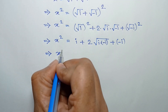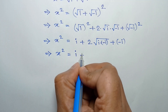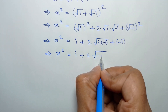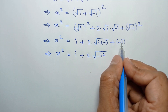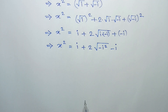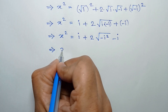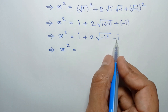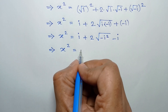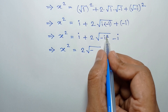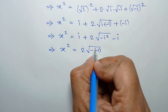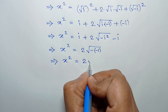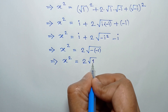So x squared is equal to i plus two times square root of i times negative i, which is negative i squared, plus negative i. Now i minus i equals zero, so those cancel, and we have 2 times square root of negative i squared. Since i squared equals negative 1, negative of i squared is positive 1.